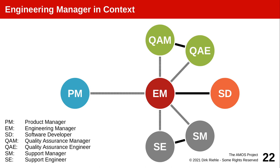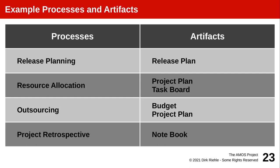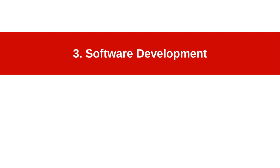The engineering manager communicates with quality assurance and product support, who need to know the ins and outs, quirks, and bugs. An engineering manager turns the overall roadmap into a release plan, allocates resources to different tasks, may delegate work to third parties or purchase libraries, and may also perform retrospectives to improve efficiency. In software development, the engineering manager often manages the largest number of people: the software developers.